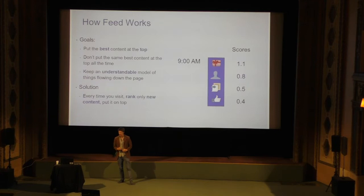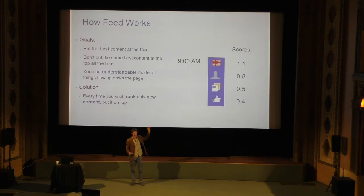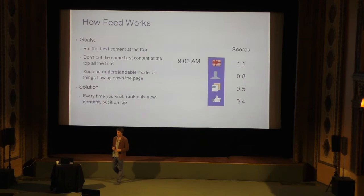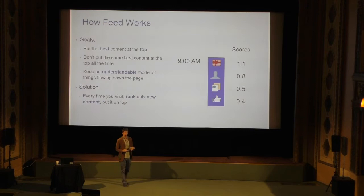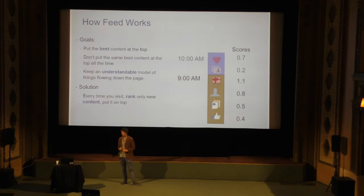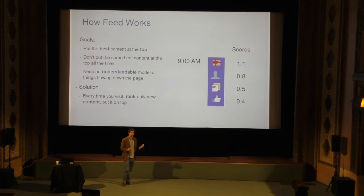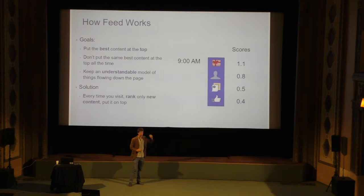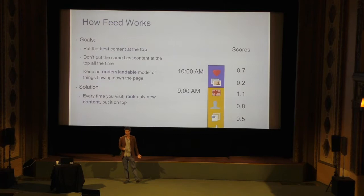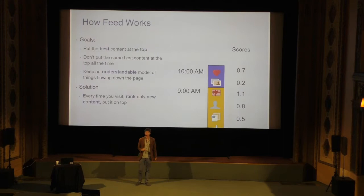One important thing to think about is the actual user experience. Before talking about machine learning, what's the product model? The goal is to put the best content at the top, but we don't want to show the same content on every visit. Once you've seen something, it should scroll down and you should only see the most important new thing. So if you come at 9am, we take all stories new to you since your previous visit, score them, and put the best at the top.